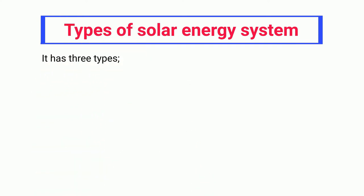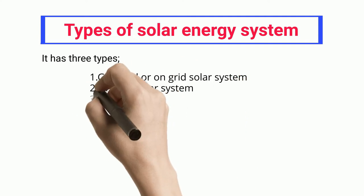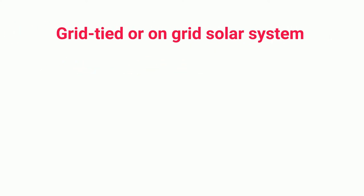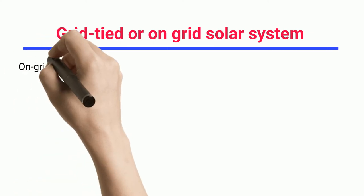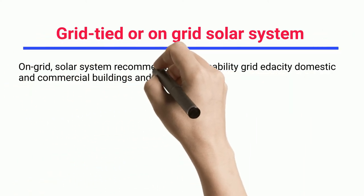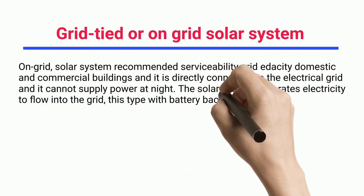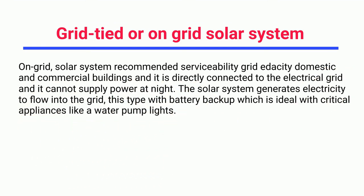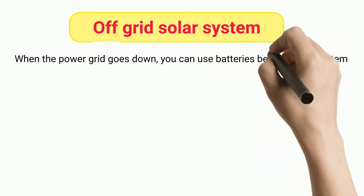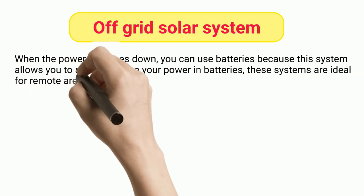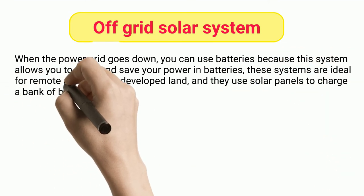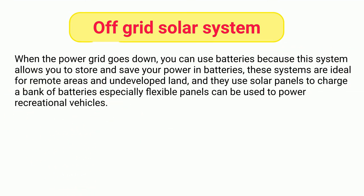Types of solar energy systems — there are three types: grid-tied (on-grid) solar system, off-grid solar system, and hybrid solar system. An on-grid solar system is recommended for domestic and commercial buildings connected directly to the electrical grid, but it cannot supply power at night. The solar system generates electricity that flows into the grid, and with battery backup it can support critical appliances like water pumps and lights. An off-grid solar system allows you to store power in batteries — ideal for remote areas and undeveloped land — using solar panels to charge a battery bank.